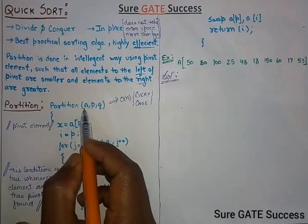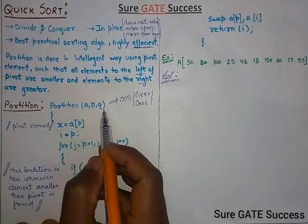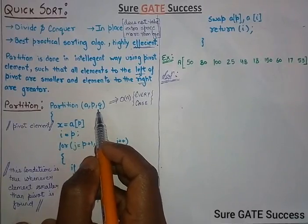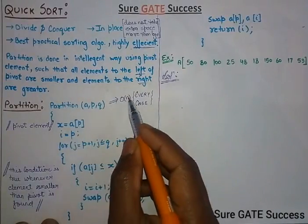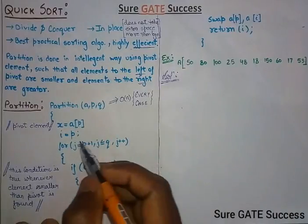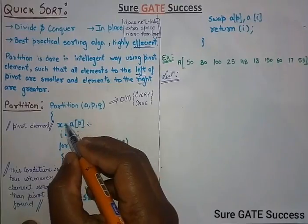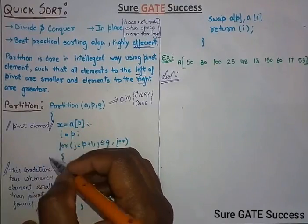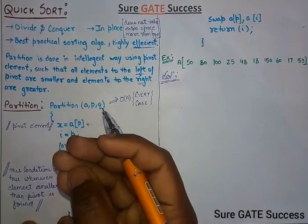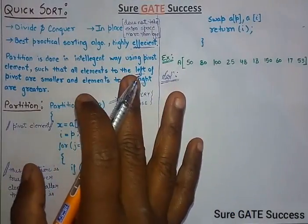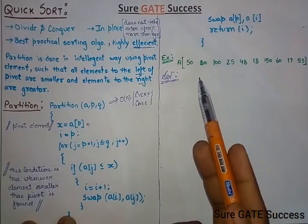We'll call this function 'partition'. It takes an array A, with P as the starting address and Q as the last element address. You can select any element as the pivot element — it might be the starting element, it might be the last element. It totally depends on you. I will be taking the first element as the pivot element in our example.